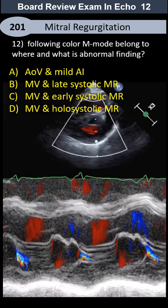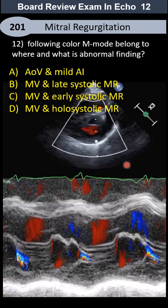The following color M-mode belongs to the mitral valve — what abnormal or positive finding can you see on this one?